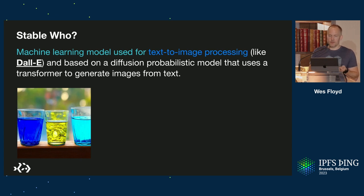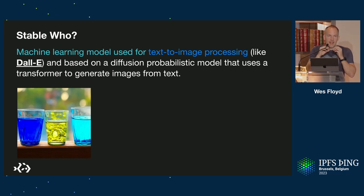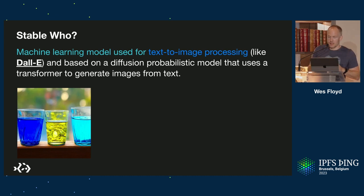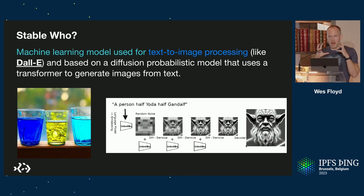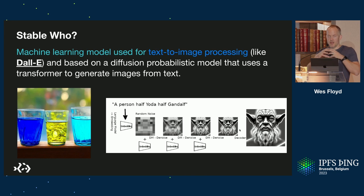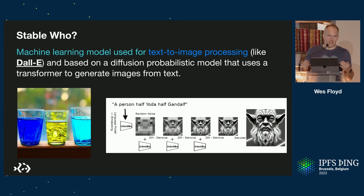If you've never heard of stable diffusion, the terminology comes from when you take dye, drop it into water, and the dye slowly stabilizes — creating a funky-looking color mesh. This is a very similar technique used for stable diffusion image generation, where you start with a lot of noise and over time refine that randomly generated noise into an image that matches a text prompt. For example, this is a person that's half Yoda, half Gandalf — over a series of iterations through the machine learning model, it gets to something that looks like Yoda and Gandalf.